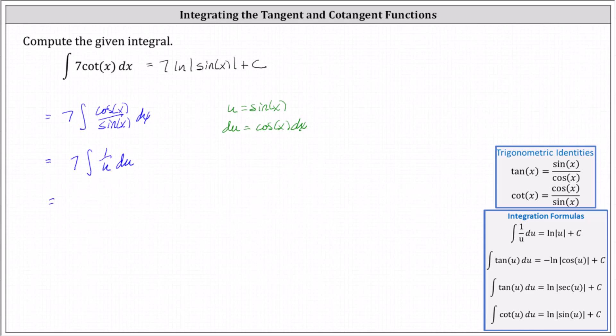The antiderivative with respect to u is equal to seven natural log absolute value of u plus c. And because u equals sine x, the antiderivative with respect to x is equal to seven times natural log absolute value of sine x plus c.